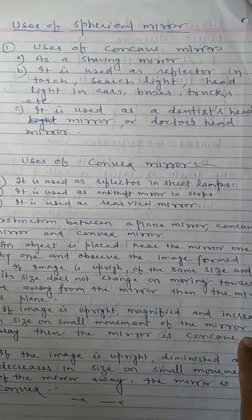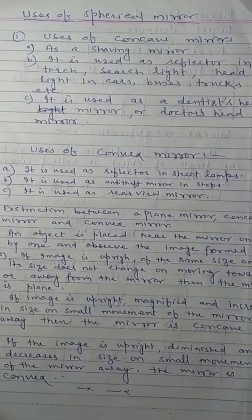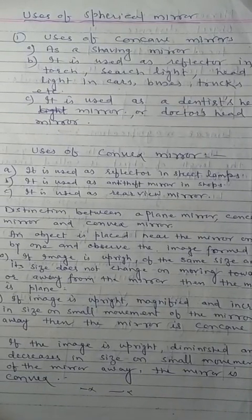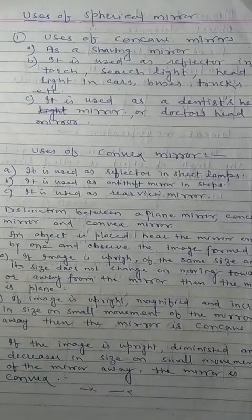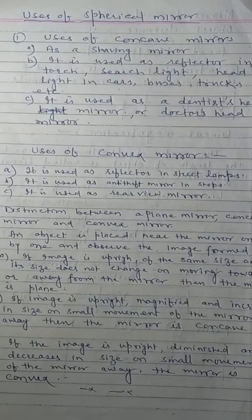Now the last topic is distinction between a plane mirror, concave mirror, and convex mirror by image formation. Without touching them, we can distinguish plane mirror, concave mirror, and convex mirror. An object is placed near each mirror one by one, and we observe the image formed by them.